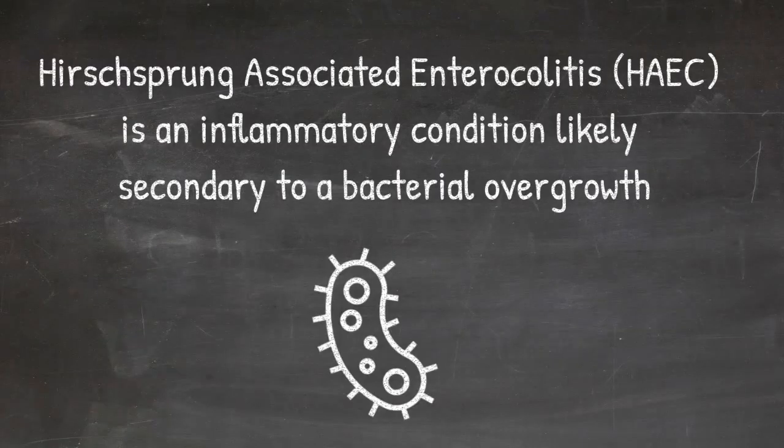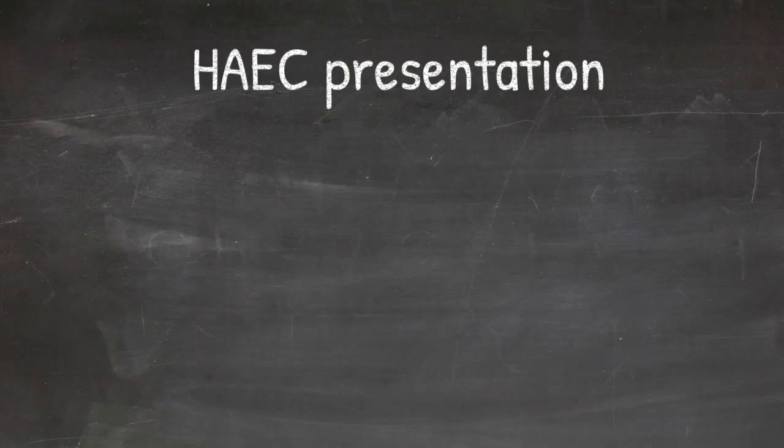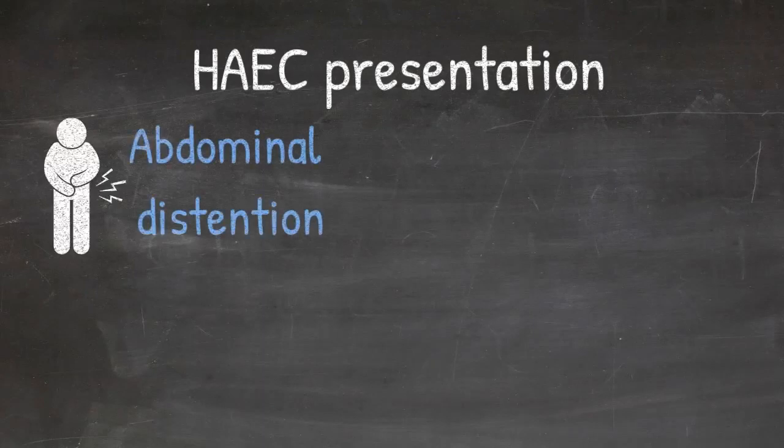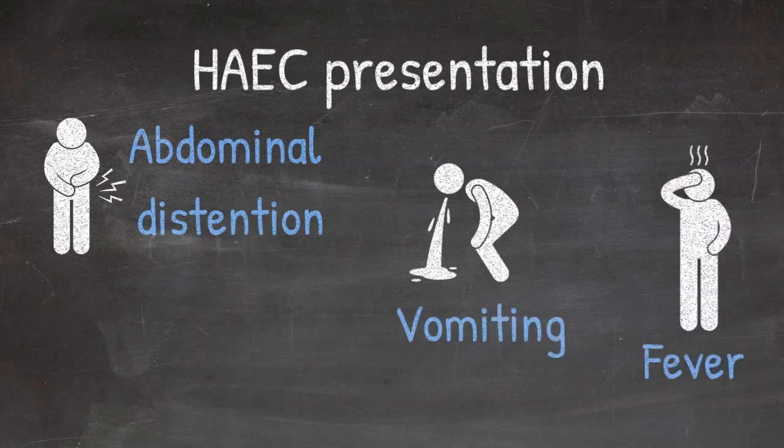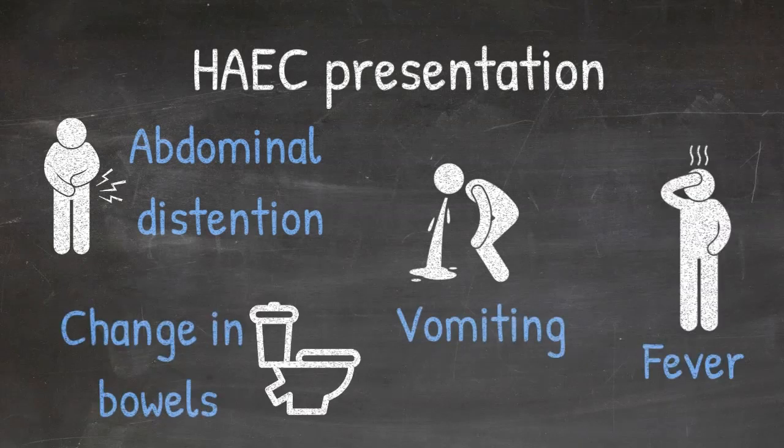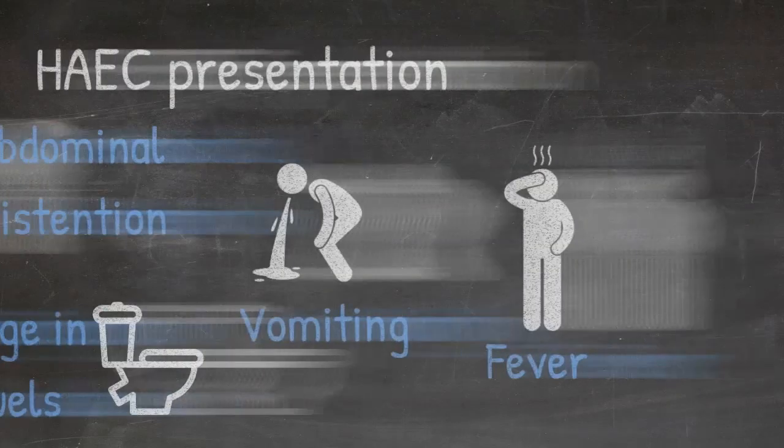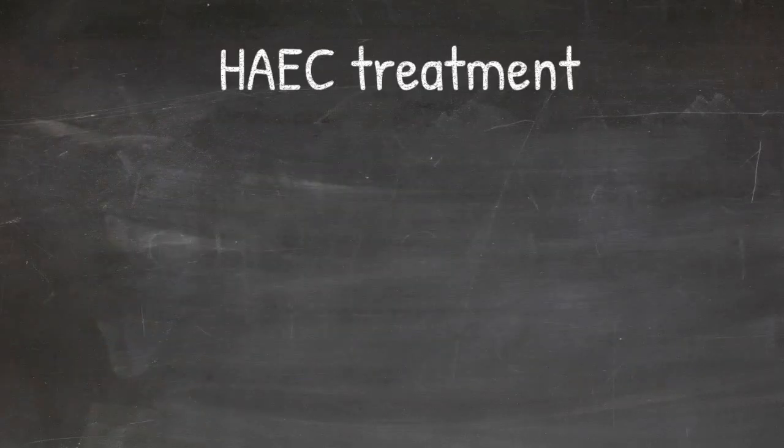Okay, let's change gears. How about Hirschsprung's-associated enterocolitis? Hirschsprung's-associated enterocolitis is poorly understood and likely is an inflammatory condition secondary to bacterial overgrowth. A child who presents with enterocolitis shows up to an emergency room with abdominal distension, vomiting, fever, change in bowel habits. This must be recognized as potential enterocolitis and treated urgently.